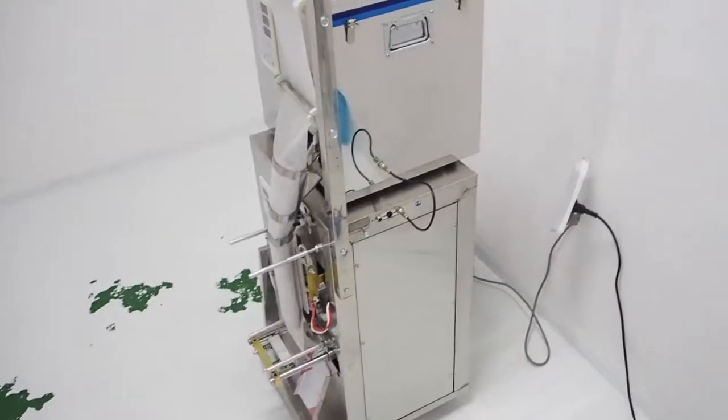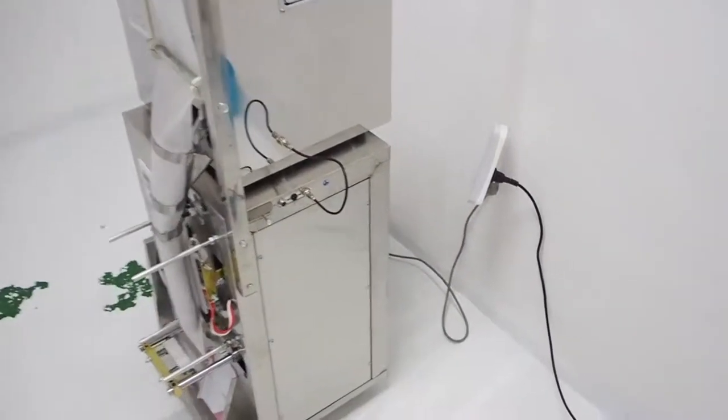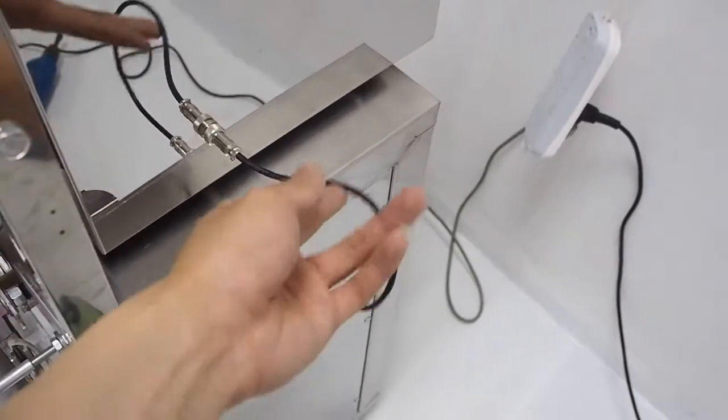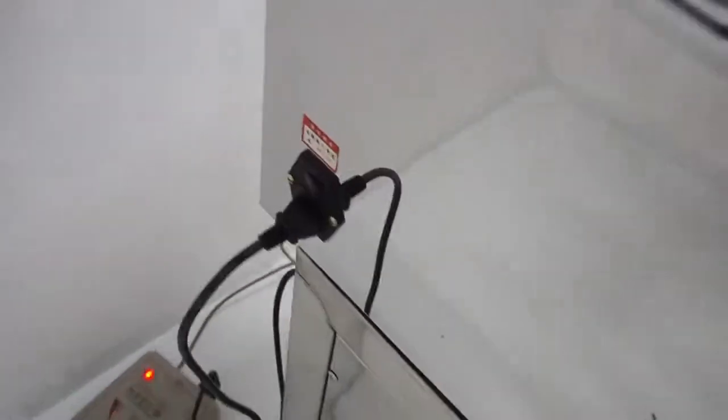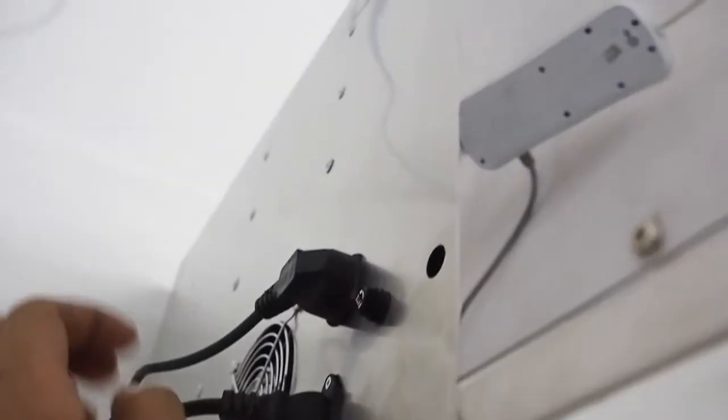The final step is to put our filling machine on top of this packing machine. As you can see, this is the signal cable which allows the filling machine to talk to this lower packing machine. And here is the power cord. And this filling machine is actually drawing power from this lower packing machine.